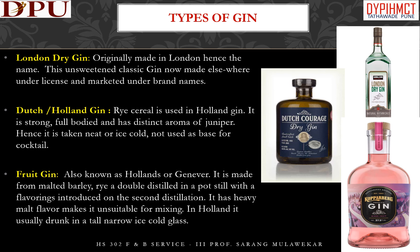Types of gin: London Dry Gin is originally made in London, thus named after the city. It is an unsweetened classic gin, nowadays made elsewhere under license and marketed under various brand names. Dutch or Holland Gin uses rye as the cereal — it is strong, full-bodied, and has a distinct aroma of juniper. Hence it is taken neat or ice-cold, not used as a base for cocktails. Fruit Gin, also known as Hollands or Geneva, is made from malted barley and rye, double-distilled in a pot still, with flavorings introduced in the second distillation. It has a heavy malt flavor which makes it unsuitable for mixing, and in Holland it is usually drunk in a tall narrow ice-cold glass.